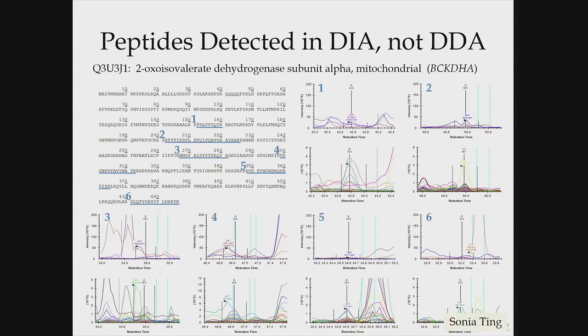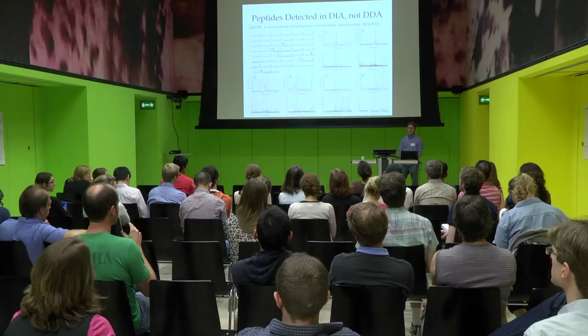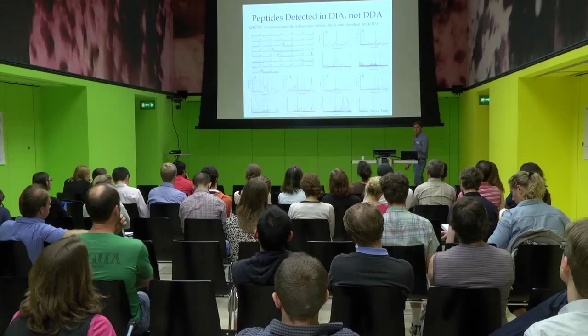These peptides are down in the noise, but keep in mind we're plotting many transitions — narrowing to the five cleanest would look cleaner. An important issue to keep in mind with DIA: for many modifications, you'll co-isolate a peptide and its modified form together in the same isolation window. For example, a peptide with oxidized methionine can co-elute and cause the MS2 signal to look very similar to the unmodified form. Without the MS1, it can be challenging to distinguish the two.